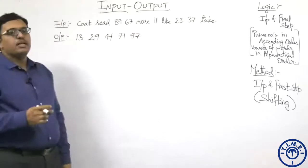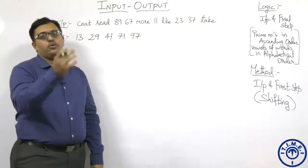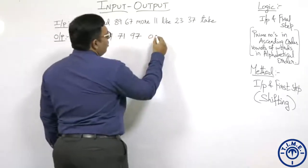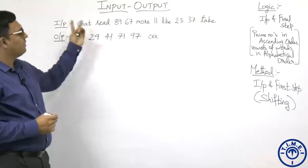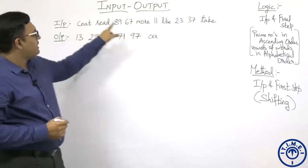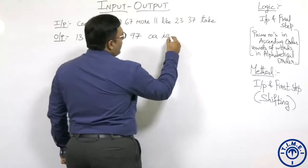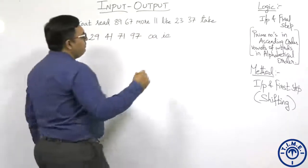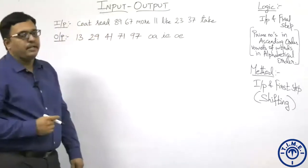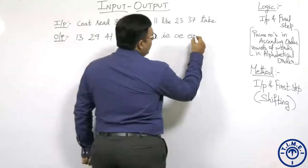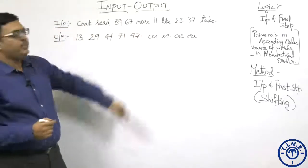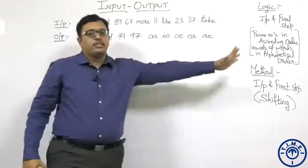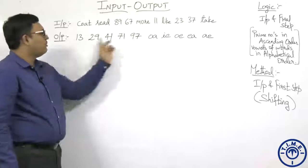Coming to the words: they are arranged in alphabetical order with only vowels retained. Alphabetical order starts with Q — 'quote' — the vowels in quote are OA, so only OA is retained, consonants ignored. After quote comes L — 'like' — vowels are IE. Then M — 'more' — vowels are OE. Then 'read' — vowels are EA. Finally 'take' — vowels are AE. These pairs of vowels are retained and arranged according to the alphabetical order of the words.